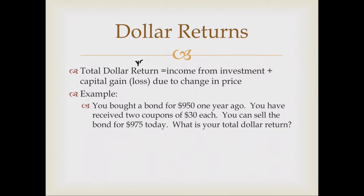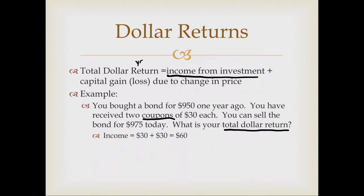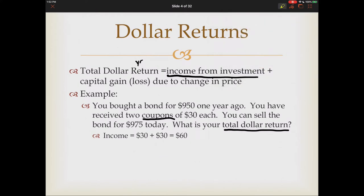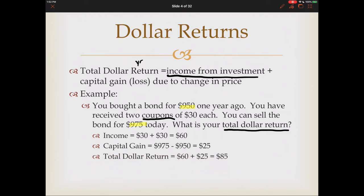Example one: you buy a bond for $950 one year ago, you have received two coupons of $30 each — semi-annual coupon payments — and then sell the bond for $975 today. What is your total dollar return? The income in this case is two coupon payments, so total income is $60. The capital gain is the change in price from $950 to $975, which is ending value minus beginning value — a $25 capital gain. So our total dollar return is $85.